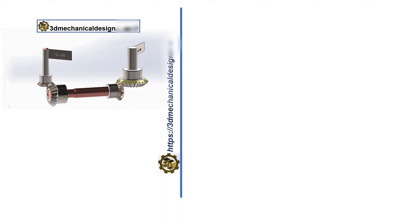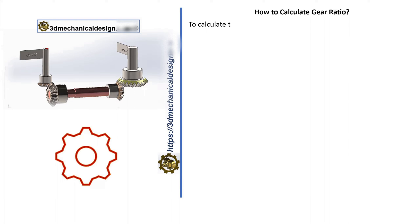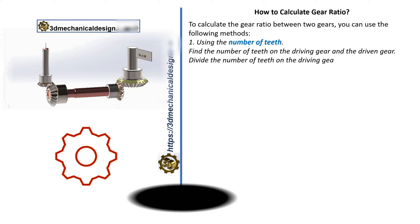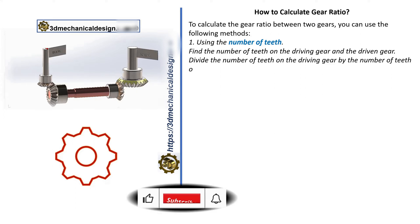How to calculate gear ratio. To calculate the gear ratio between two gears, you can use the following methods. First, using the number of teeth: Find the number of teeth on the driving gear and the driven gear. Divide the number of teeth on the driving gear by the number of teeth on the driven gear to find the gear ratio.